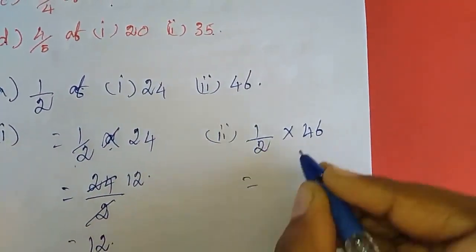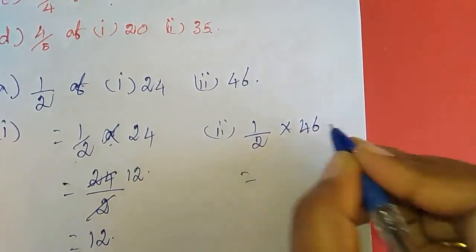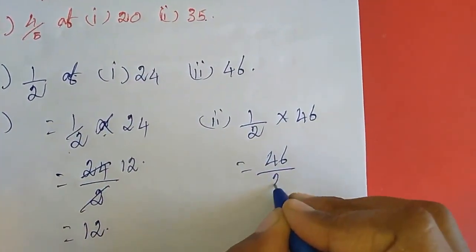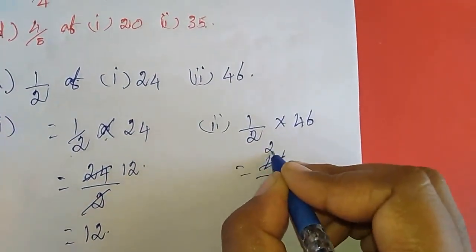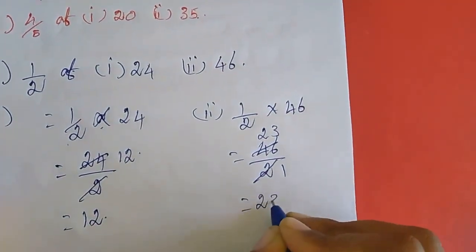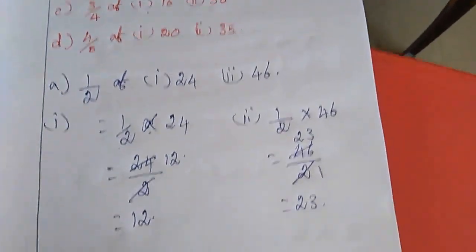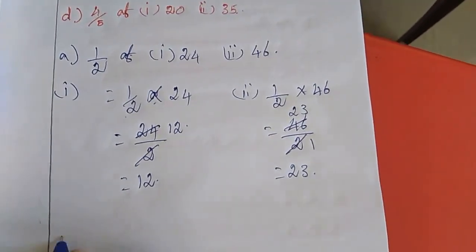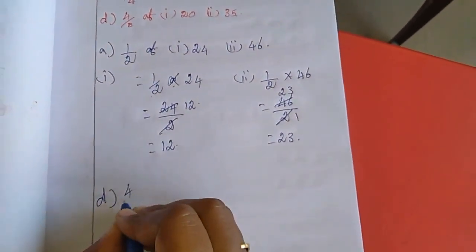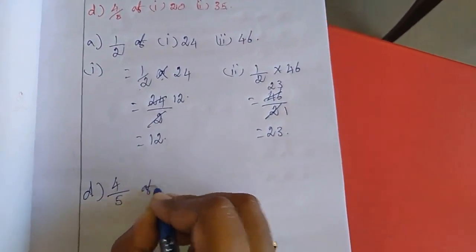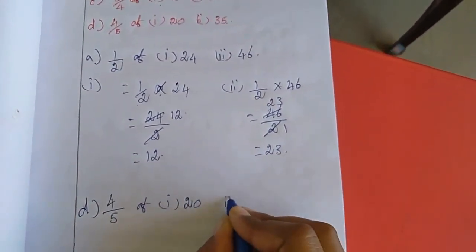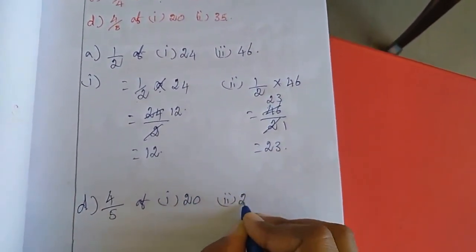Next is the second one: 1 by 2 of 46. If you cancel, you can do it. Now d sum — see here: d sum is 4 by 5 of the first one, which is 20, as well as the second one, which is 25.